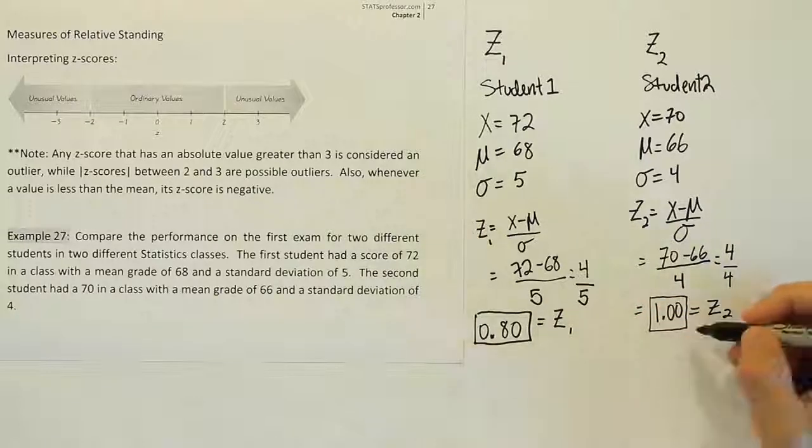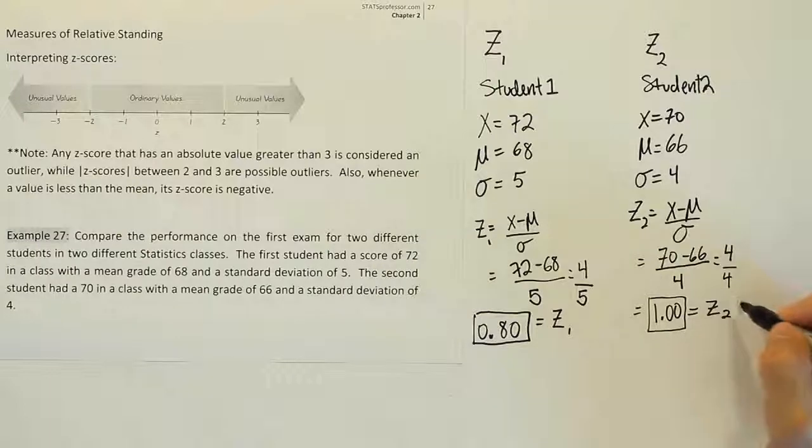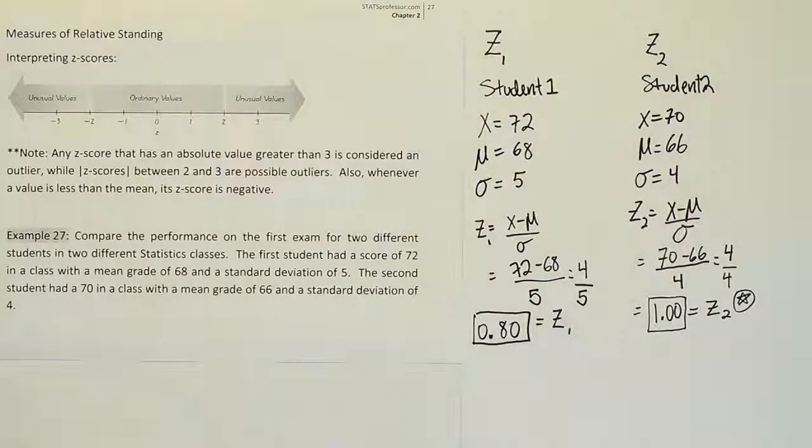And so when you compare these two, this guy did better in his class than this guy did in his class. So we're going to give z-score 2 the winner. And that means that the best student here is student 2 comparing the two.